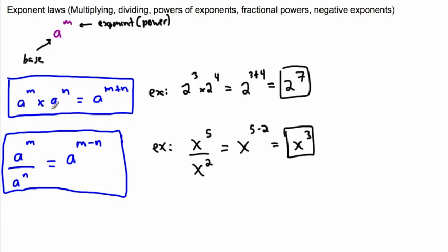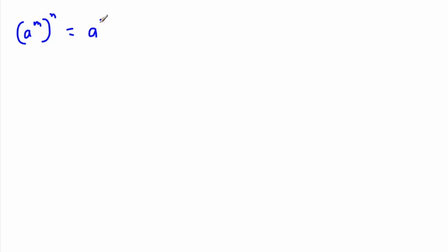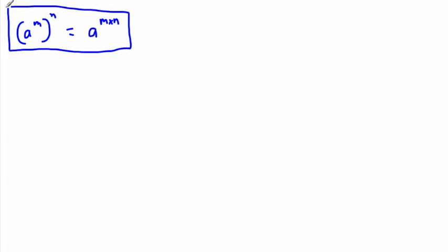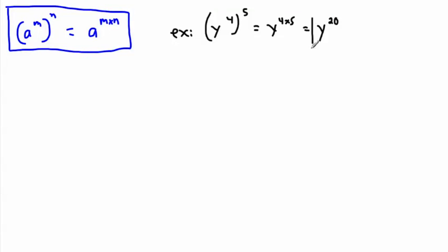Here's another rule. This time we have an exponent raised to another exponent: a to the power of m, all raised to the power of n. That's different from multiplying. A to the power of m to the power of n equals a to the power of m times n — a power to a power means you multiply the exponents. For example, y to the power of four, all to the power of five, equals y to the power of four times five, which is y to the power of twenty.